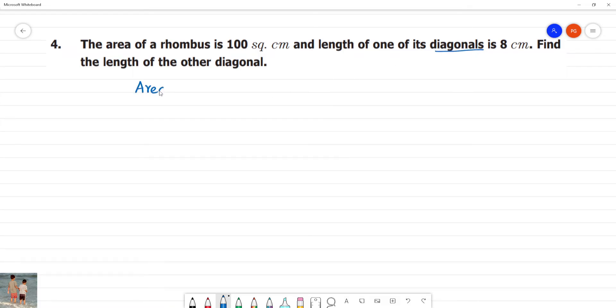For area of rhombus when diagonal is given, find the length of the other diagonal. We will find the length of the other diagonal.